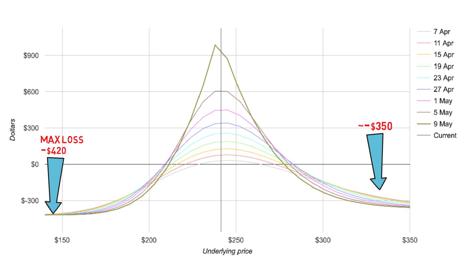Next, our break even points. For us to make our money back and break even, Apple needs to expire at $277.40 or $211.50 on the other end. Below $277 and we begin to experience losses, and above $211 the same goes. Obviously, this is a sliding scale — the further away you get from break even, the worse the losses become until you reach max loss.